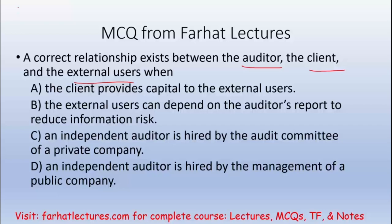Let's look at the options to see how we draw this relationship. Option A: the clients provide capital to the external users. Not at all — the client, meaning the company that's being audited, provides financial information to the users to make a decision. Therefore, A is out. That's not the correct relationship.